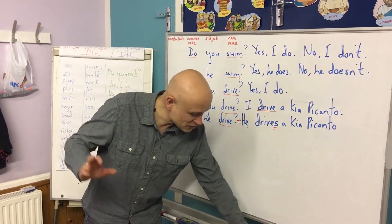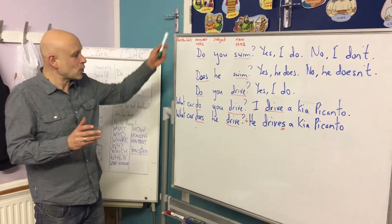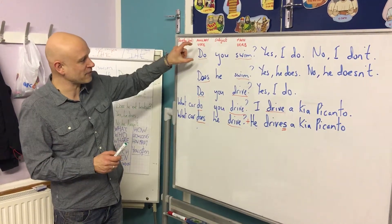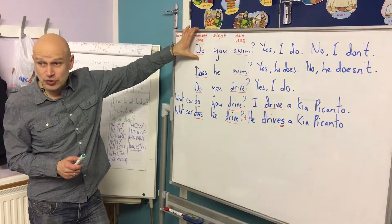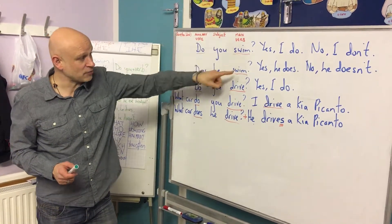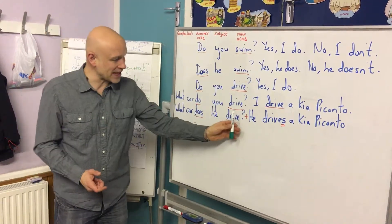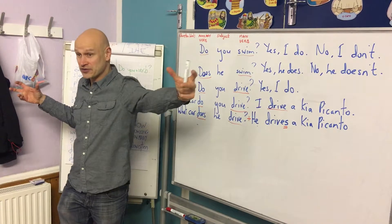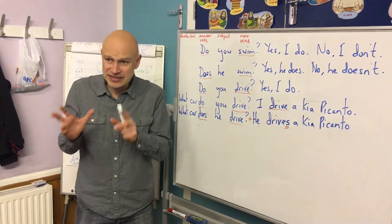Let's quickly look at this grammar. Yes/no questions are made up of three words: the auxiliary verb 'do' or 'does,' the subject, and the main verb. Longer questions use the same structure but we add a question word at the beginning to get a longer answer. There are just two things I need to mention about this.